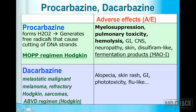The mechanism of action of procarbazine: it leads to formation of hydrogen peroxide (H₂O₂), generates free radicals that cause cutting of DNA strands. Dacarbazine shares this mechanism. Adverse effects common to both include myelosuppression (bone marrow toxicity), pulmonary toxicity in the form of pulmonary fibrosis, hemolysis, GI intolerance, CNS disturbances, neuropathy, and skin reactions.